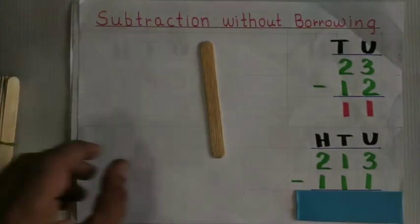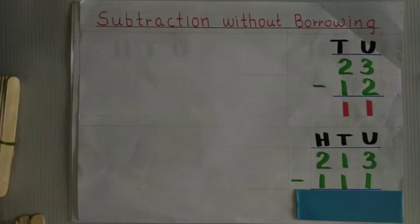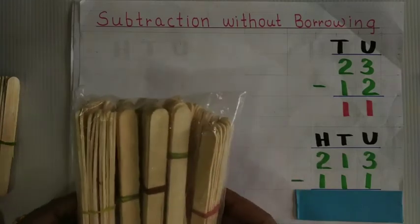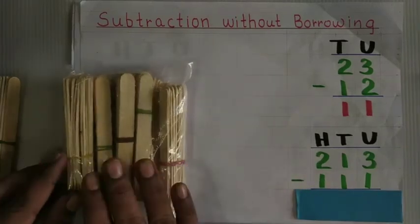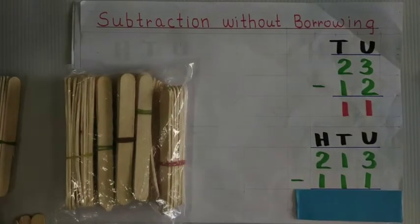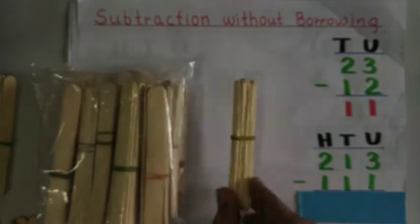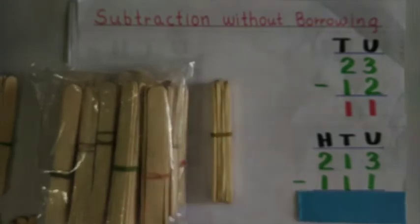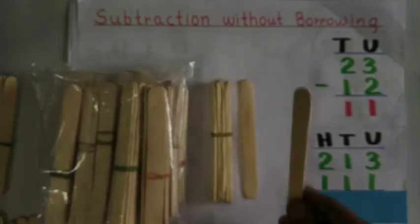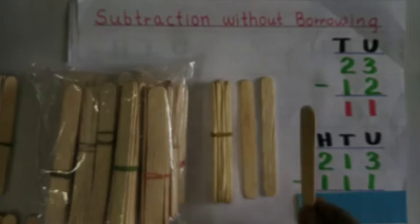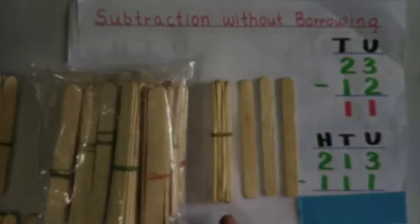Now let us see the second sum. 213. This one packet contains 100 axiom sticks. So we have 100, 200, and 13 — that is 10, and 1, 2, 3. From that, how much do I have to minus?